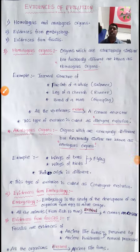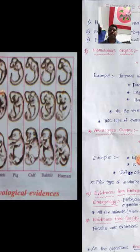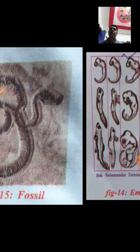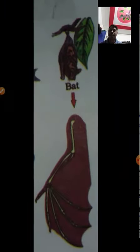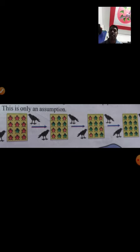Hello students, welcome to digital class. Today we will discuss about evidences of evolution. Generally, accumulation of variations in large numbers leads to the formation of a new species — this is the way of evolution. In a red beetle population, one green beetle variation appeared over two successive generations, and finally a new species formed, meaning evolution occurred. But we need evidence for this assumption.